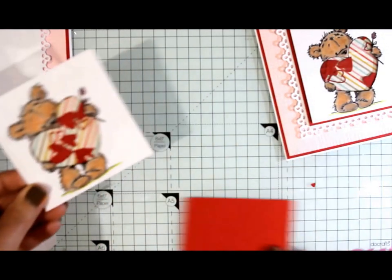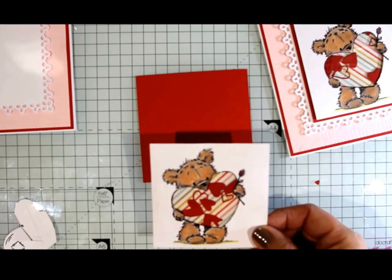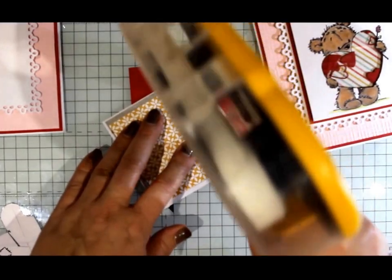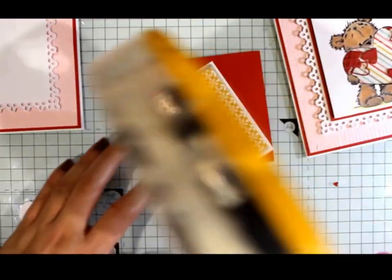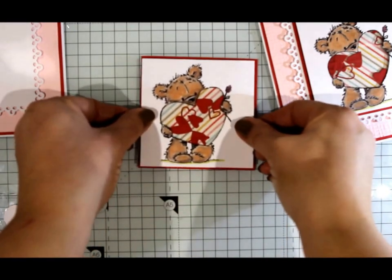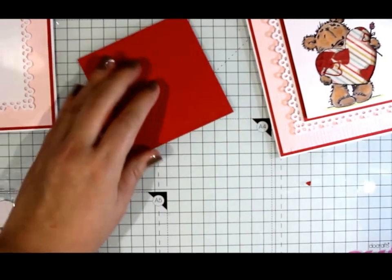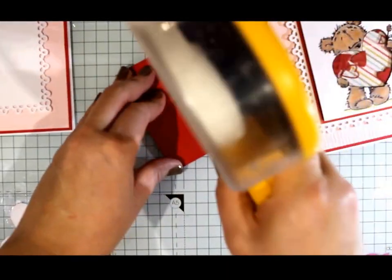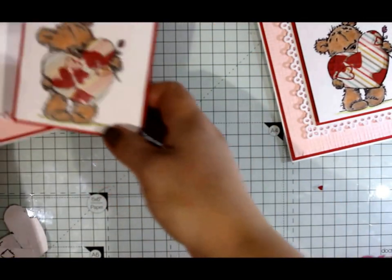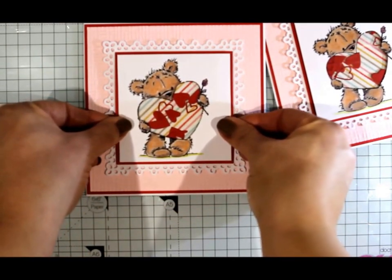You want to mount this whole piece on top of another red piece of cardstock. This piece is cut to nine and a half by nine and a half. Just going to flat stick that in there. Put in some more scotch tape on the back. Stick that onto our card. Nice and central.